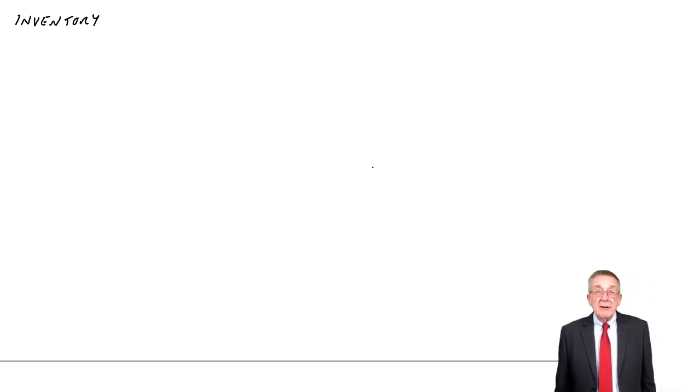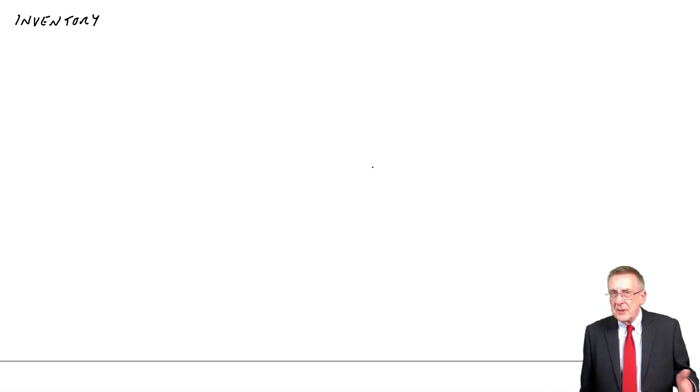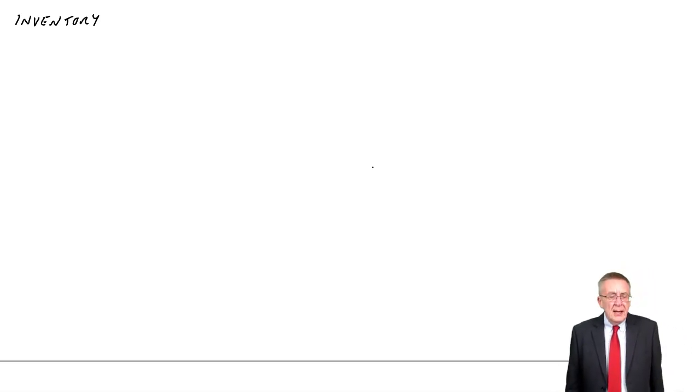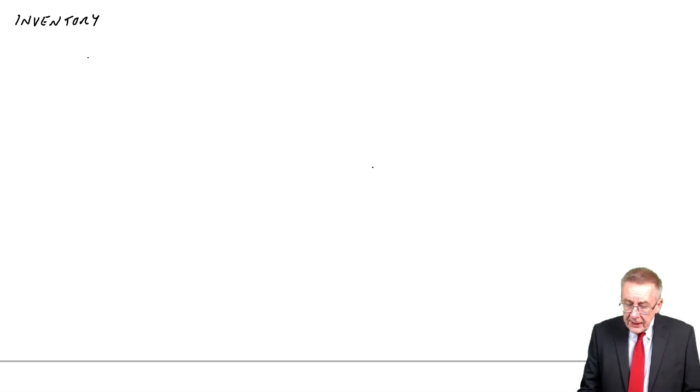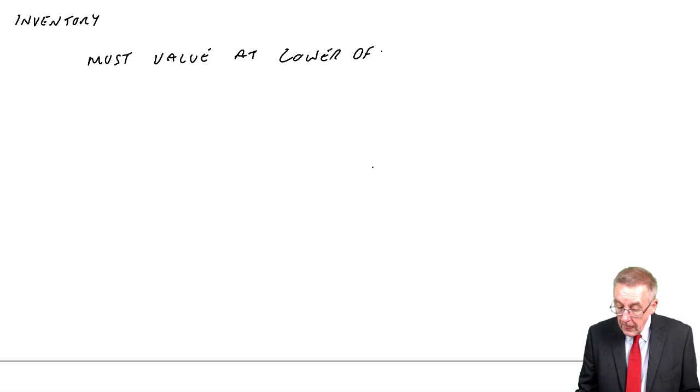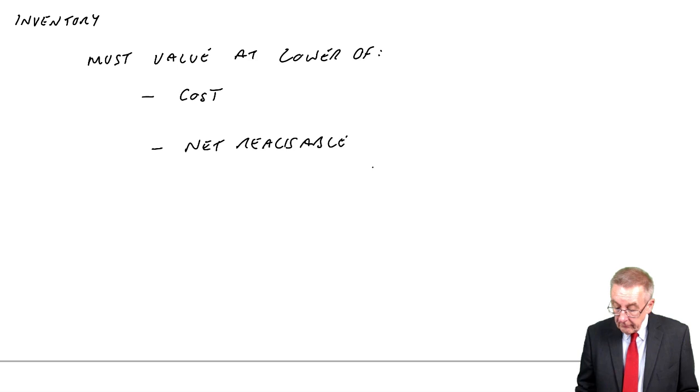The rules are in accounting standard number two. We don't need the numbers of these rules, but there are two important rules. The first rule, which I'll deal with in this lecture, is that we must value at the lower of two things: the cost and what we call the net realizable value.